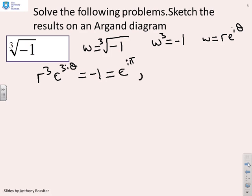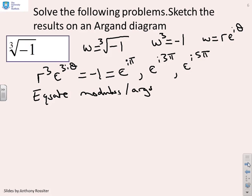So if I substitute that in, I get r cubed e to the 3i theta equals minus 1, which equals e to the i pi. Because minus 1 is e to the i pi. But it's not just e to the i pi. It could be e to the i 3pi, or it could be e to the i 5pi. Now I know there's only three solutions, so I'm not going to write down more than three different alternatives.